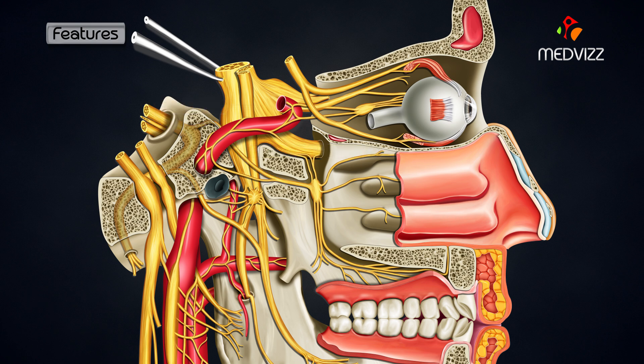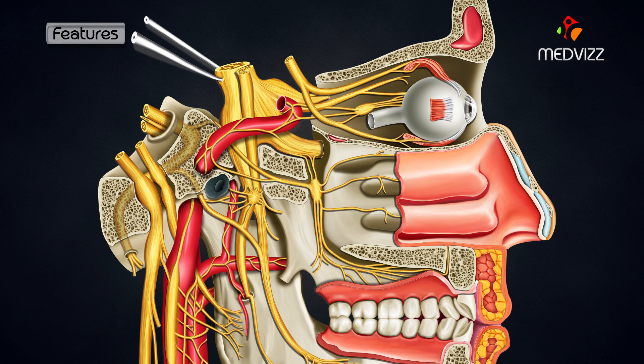The flattened ganglion lies in the pterygopalatine fossa, just below the maxillary nerve, in front of the pterygoid canal.